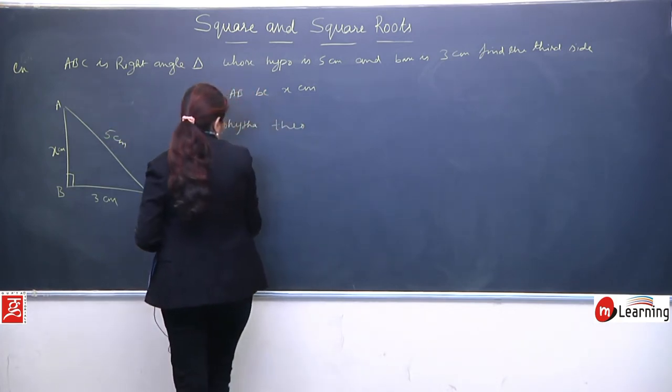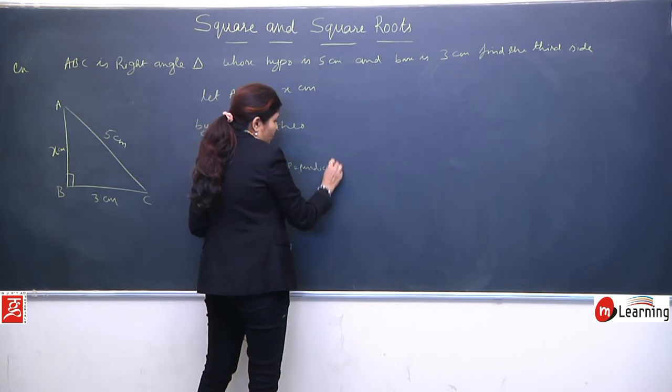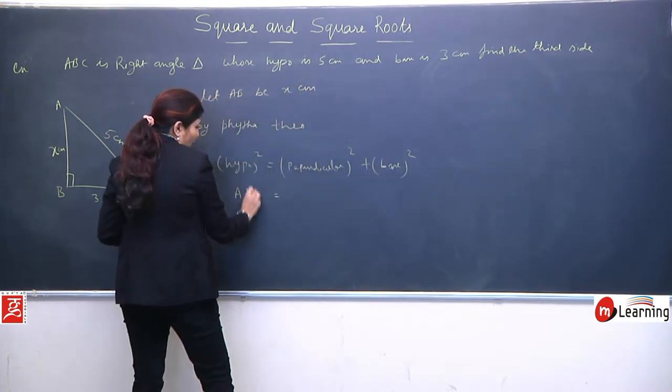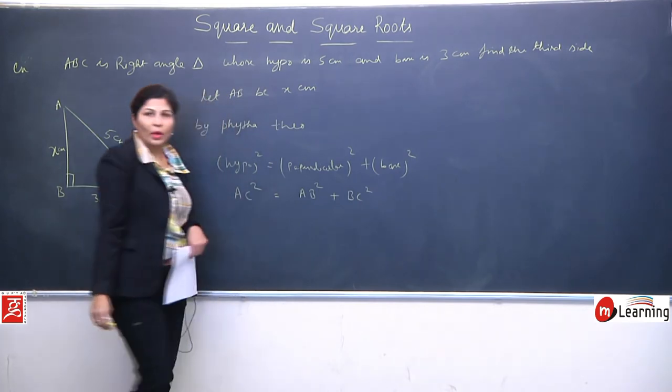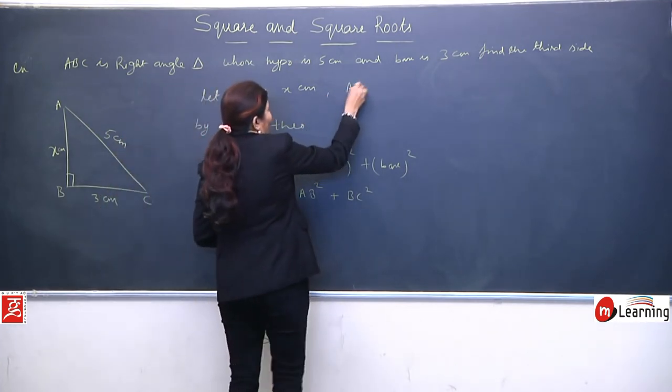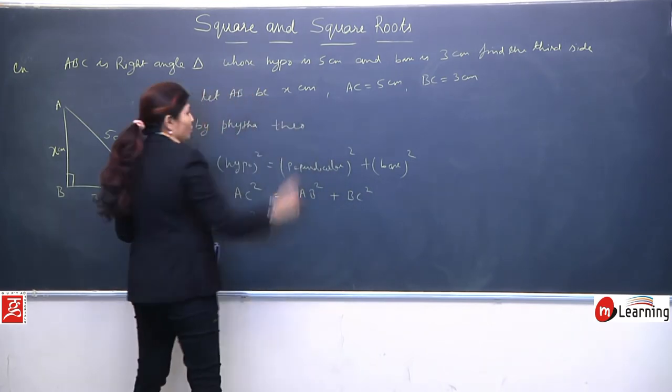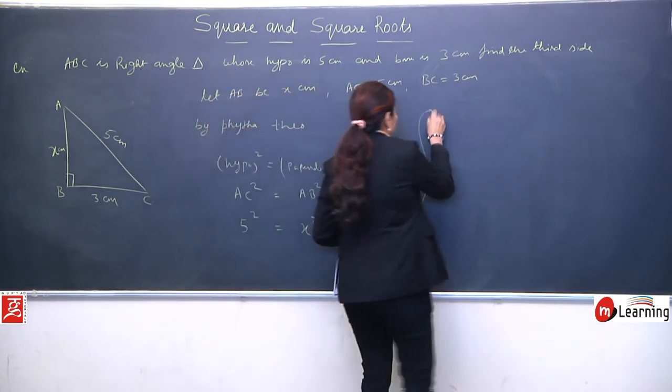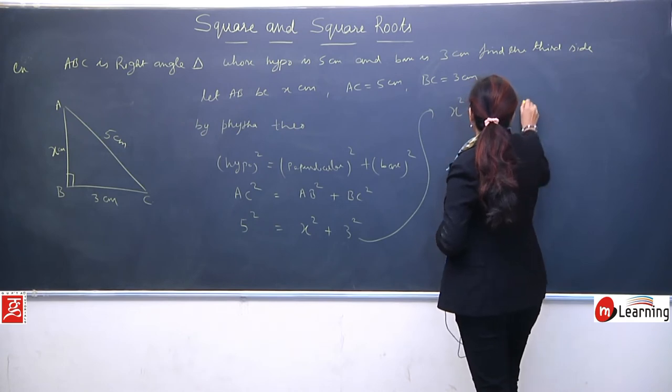Now, by Pythagorean theorem, what we can write? Hypotenuse square is always equal to perpendicular square plus base square. In short, if we see according to the question, AC square equals AB square plus BC square. We can write like this. AC value is given as 5, so we have substituted. You can also write here AC is 5 cm and BC is 3. And we already assumed AB is x. We can substitute the values.